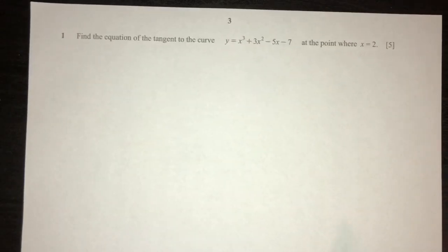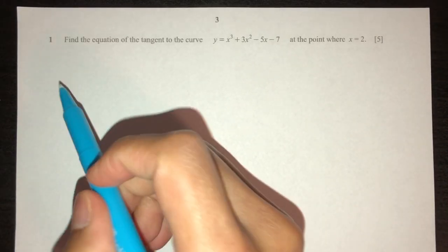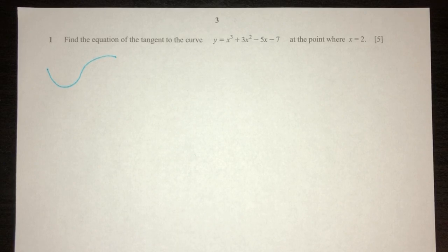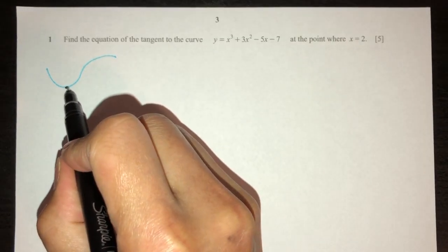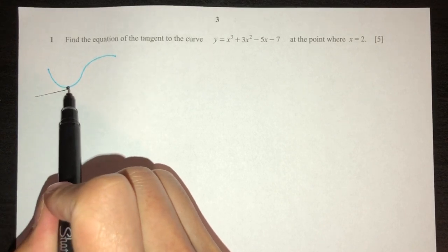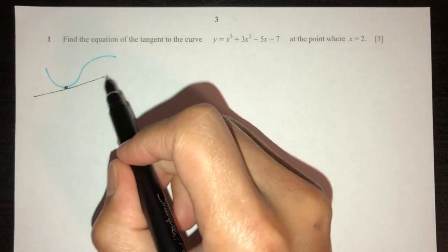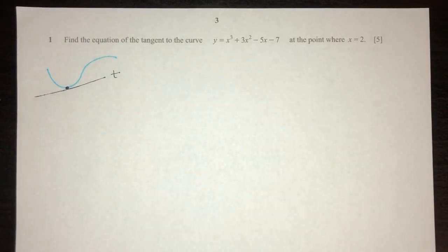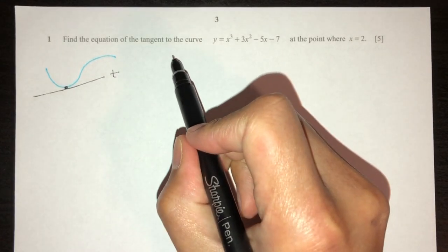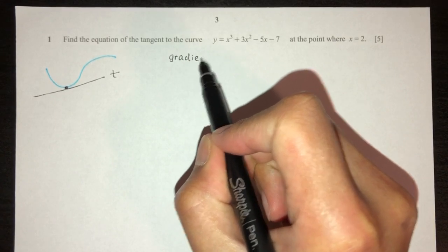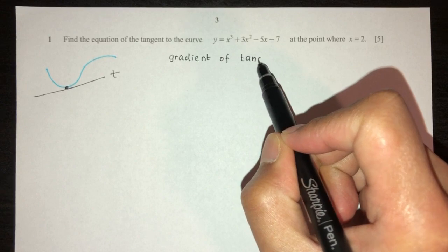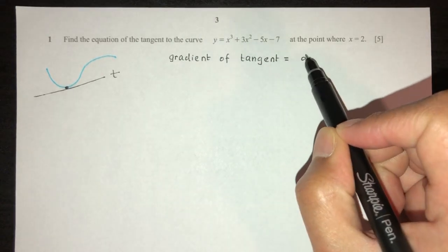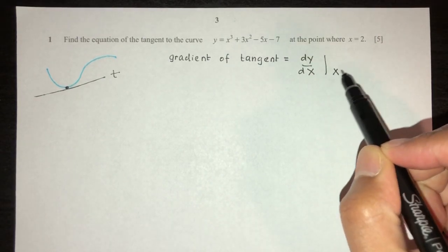If you want to know exactly what they're asking for, it's always best to make a drawing so you know what they're asking for. So let's say we have a curve and here we have the point x equal to 2, and you want to find the equation of a tangent — a line touching the point. Given the tangent is a straight line, you first have to find the gradient. The gradient of the tangent is the same as dy/dx at the point x equal to 2.